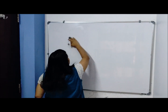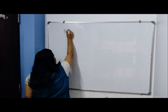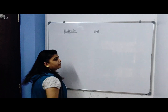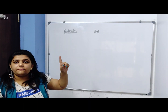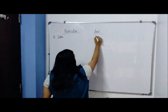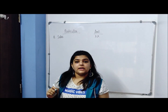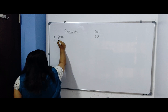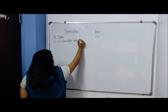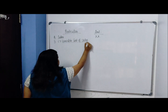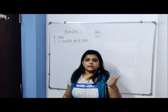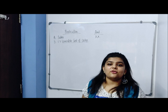Let us prepare our income statement under marginal costing. The format is very important — any question, any chapter, the format should be there. Particulars on one side, amount on the other. The first item is Sales — same as in our smaller statement. Next, we deduct variable cost. Here I am going to write 'variable cost of sales'. How do we reach variable cost of sales? Direct material, direct labor, direct expenses — these are all variable costs.